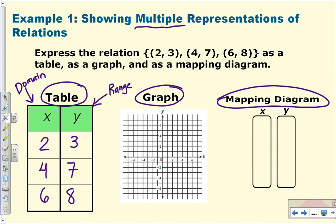Now, let's graph these three ordered pairs to show the relation. So I go over 2, up 3, over 4, up 7, and then over 6, up 8. I'm just going to estimate 8 because it's off the graph. Here is a graph of the relation.